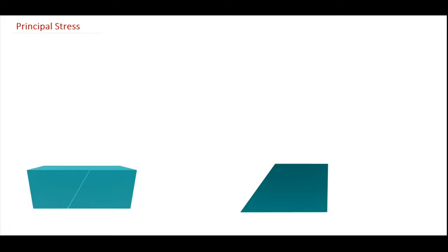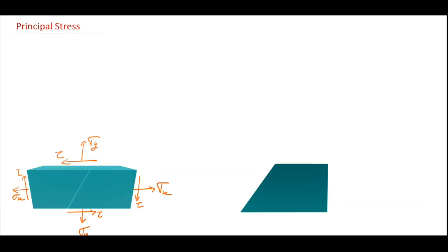This lecture is regarding the principal stresses and principal planes. The normal stress and shear stress varies with the angle of inclination of the plane in an element. If I consider a biaxial and shear stress condition, the element will be acted upon by two tensile stresses: one in the direction of X, that is Sigma X, and another in the direction of Y, that is Sigma Y, along with a shear stress acting on the element.